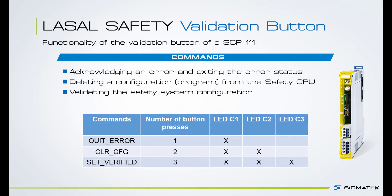For all these commands there are several button presses, and for each button press you can activate an LED. In our case we have three LEDs: LED C1, LED C2, and LED C3. With the quit error command you need one button press which activates LED C1. With the clear configuration command we have two button presses which activate LED C1 and LED C2. And with the set verified command we have three button presses for LED C1, LED C2, and LED C3.